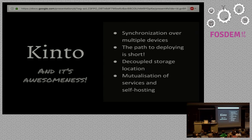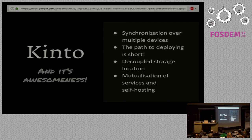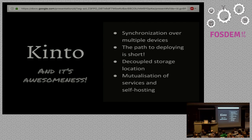Kinto is basically a minimalist JSON storage service which is being used and developed at Mozilla, and it has been released under the Apache V2 license. Through Kinto, you can create great user-facing interfaces which can be synchronized over multiple devices. When you create a web API, you're often worried about handling cross-origin resource sharing, or maybe you want your web app to be very secure and take care of user privacy through encryption. When you use Kinto, the path between your great idea and deployment to production will be quite short. We at Kinto are firm believers that user data belongs to users and not necessarily the application, so we believe the application should be decoupled from the storage location.